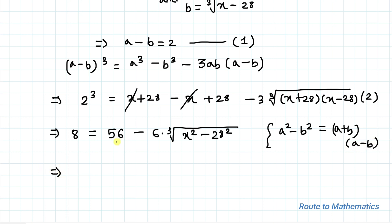This implies, now taking 56 to the left hand side, we have minus 48 equals minus 6 multiplied with cube root of x square minus 28 square. So minus 48 divided by minus 6 is 8 equals cube root of x square minus 28 square.